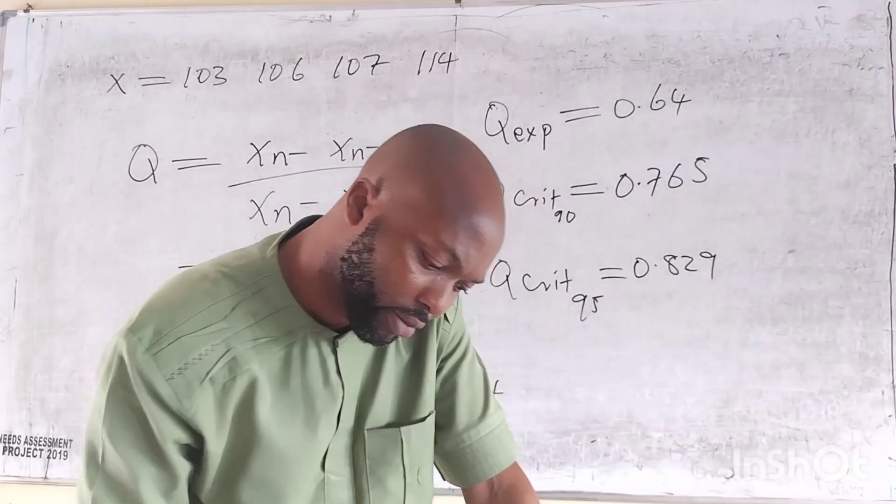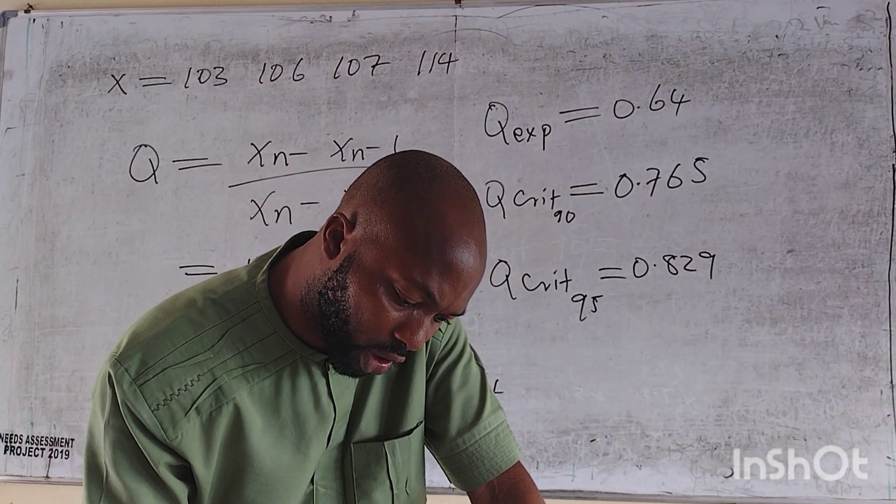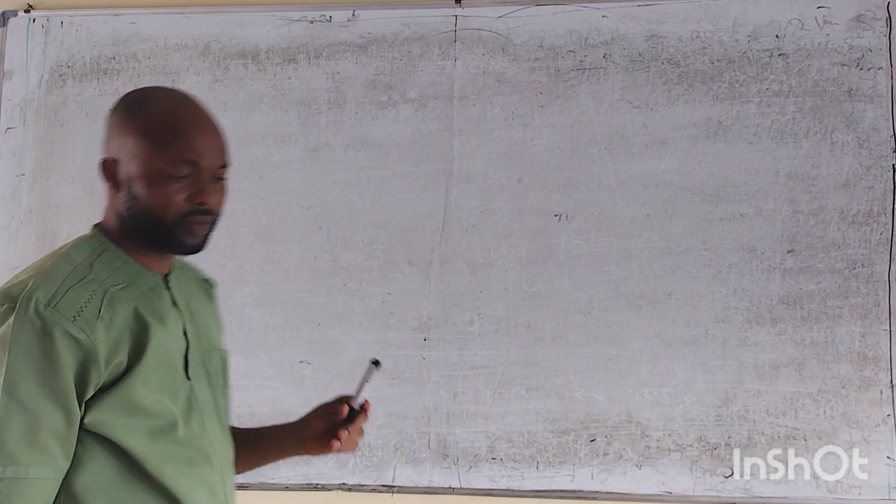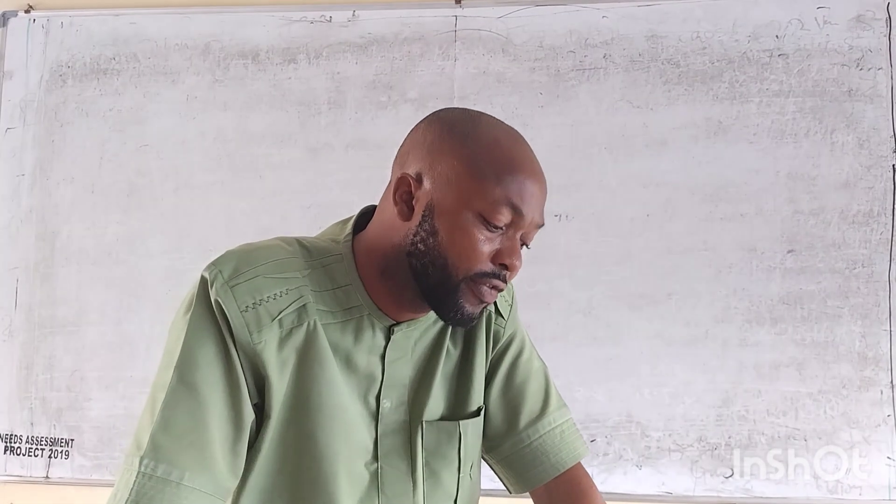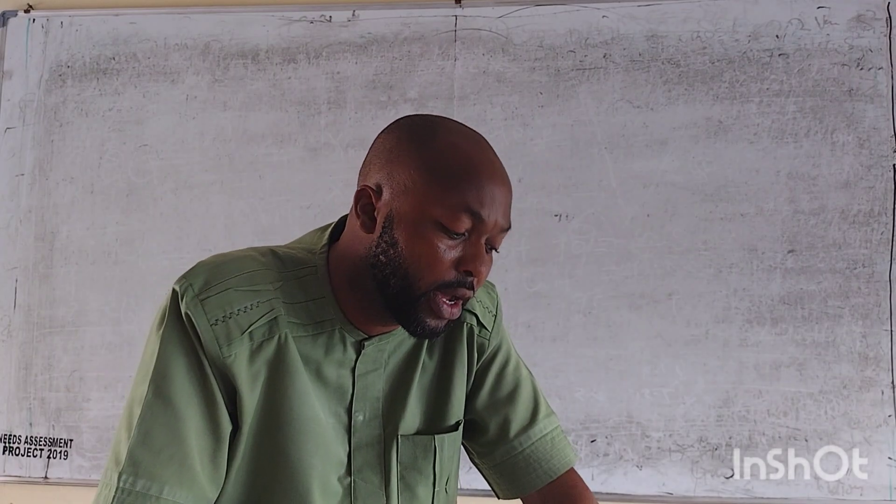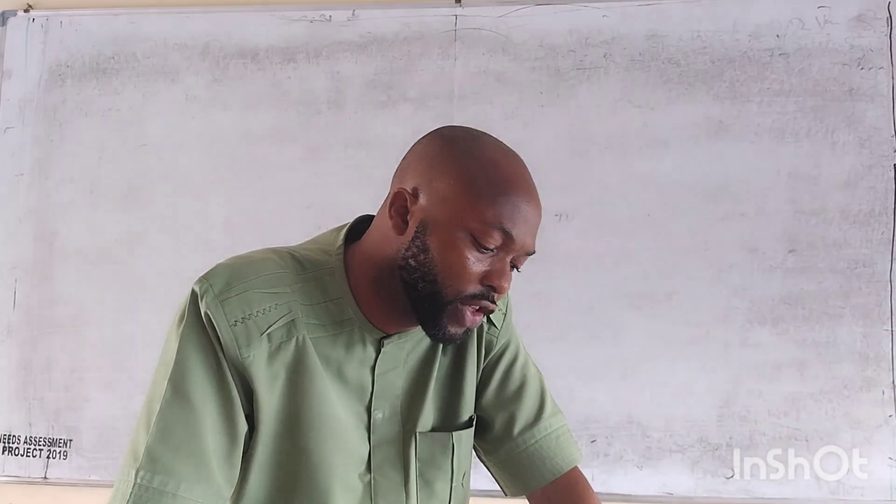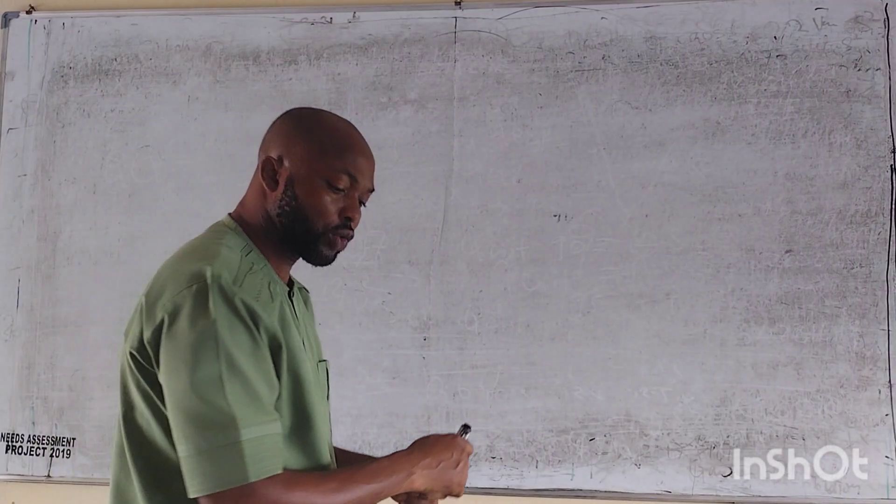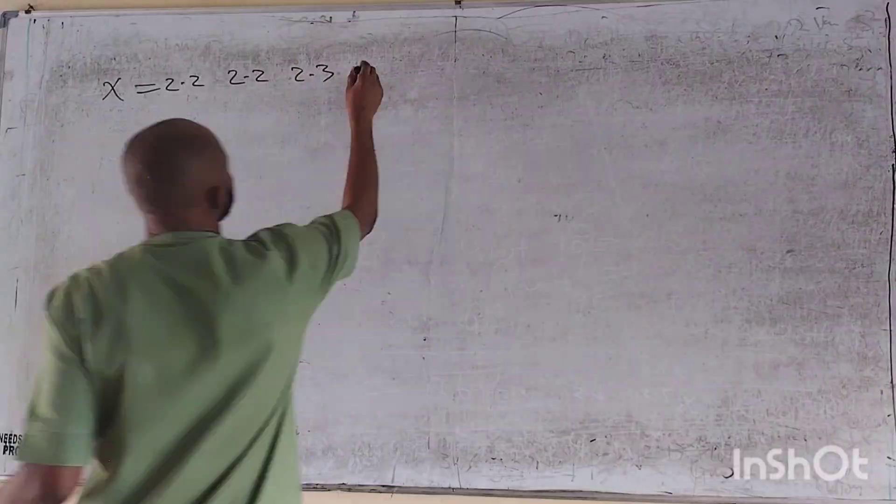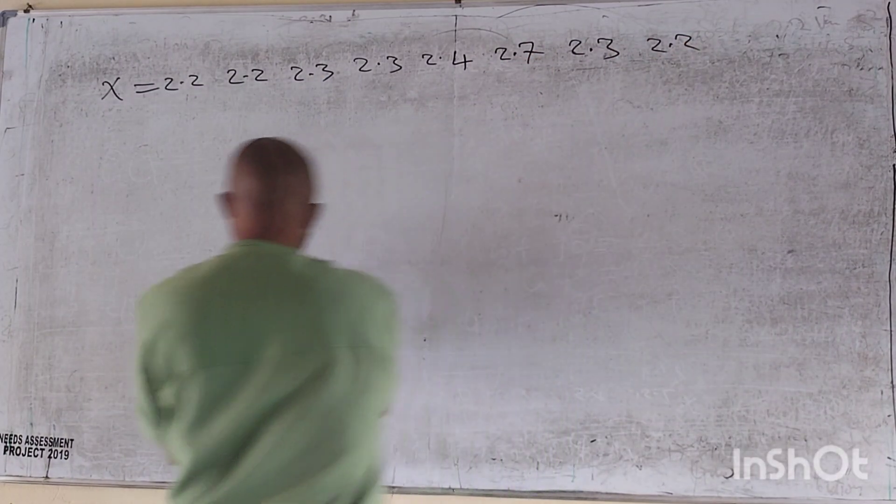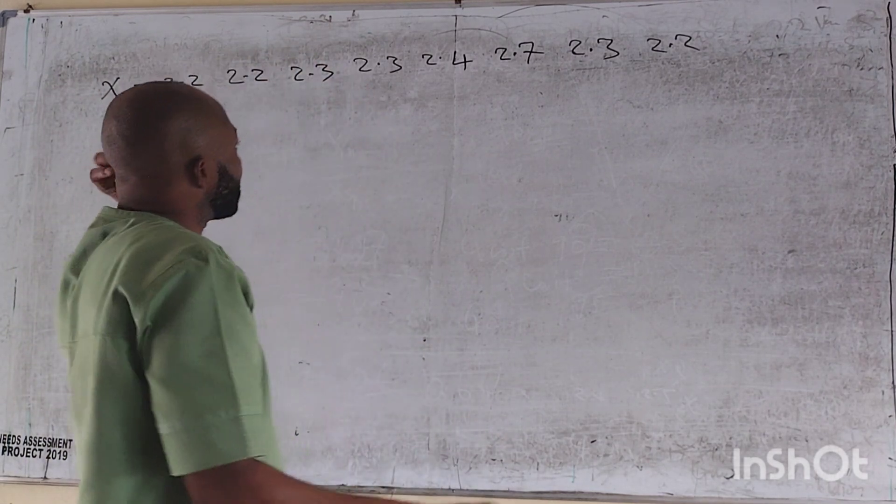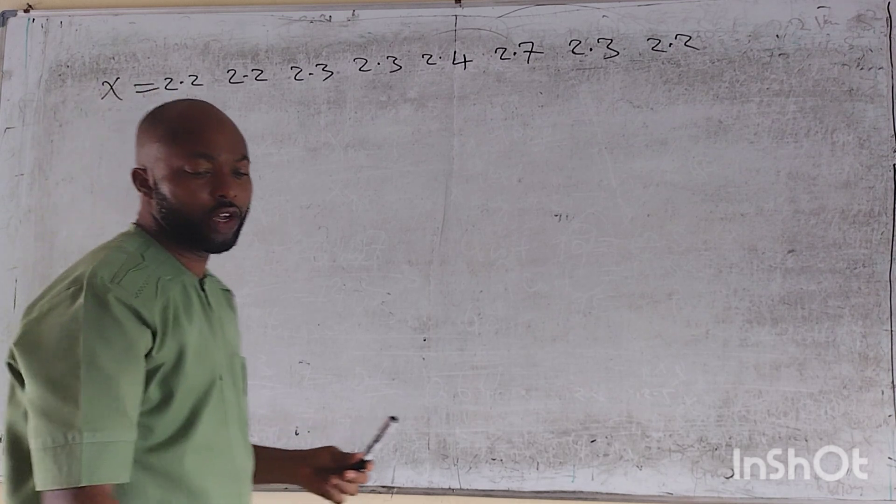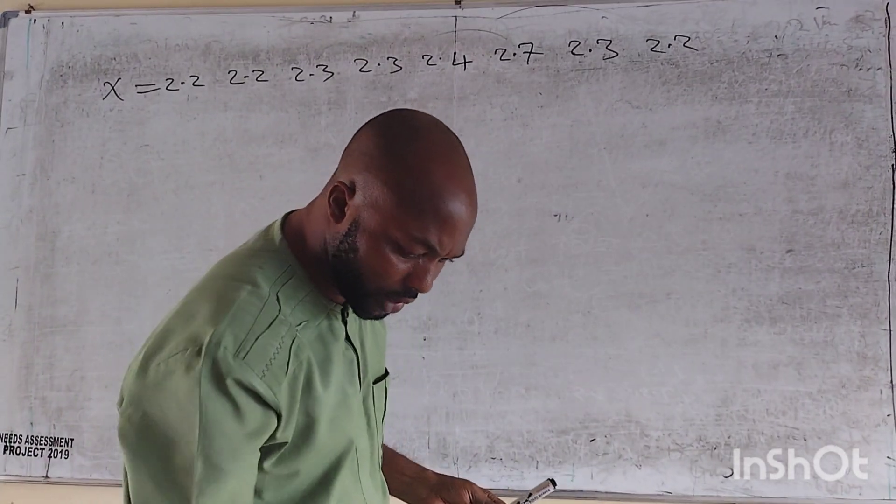Let's take another question. Question number three. The following set of measurements were obtained in the analysis of nitrogen content of a soil sample from UNICA, University of Calabar Farm, for the control and monitoring of the application of fertilizer NPK. The variables are 2.2, 2.2, 2.3, X, 2.2. So from what we have there on the board, it's obvious that 2.7 is the outlier. It's too large. So we have to find out if we must retain, at what confidence?